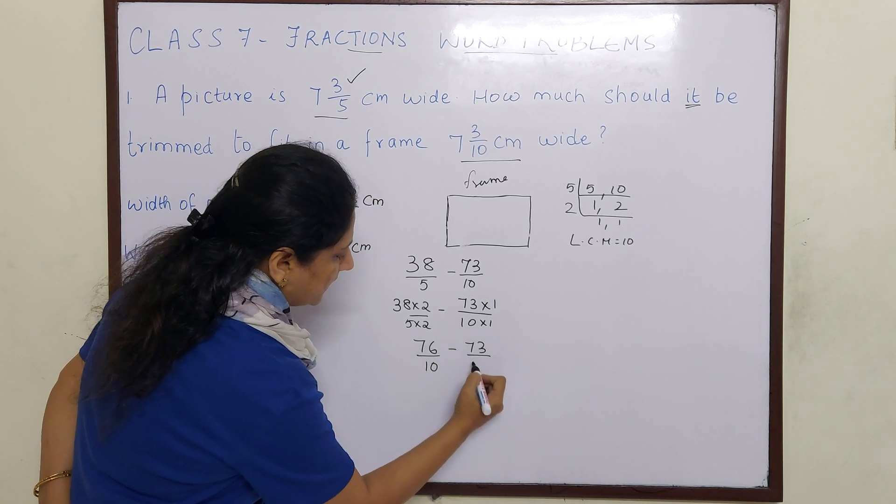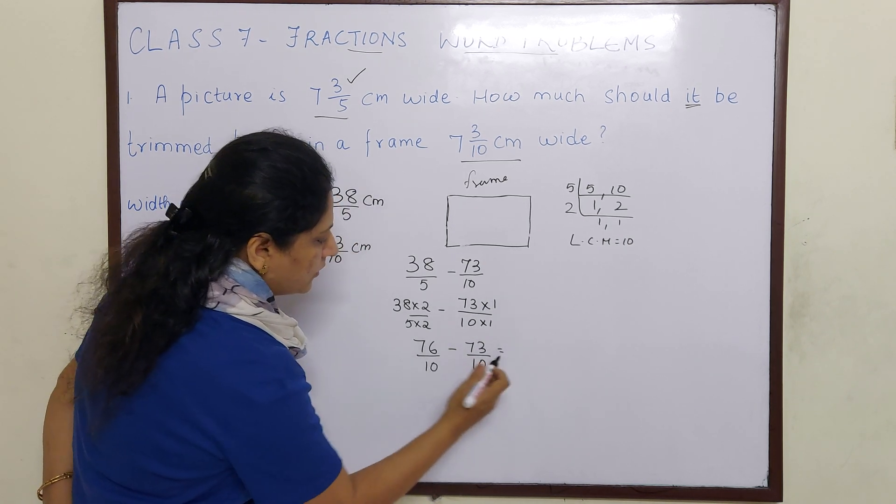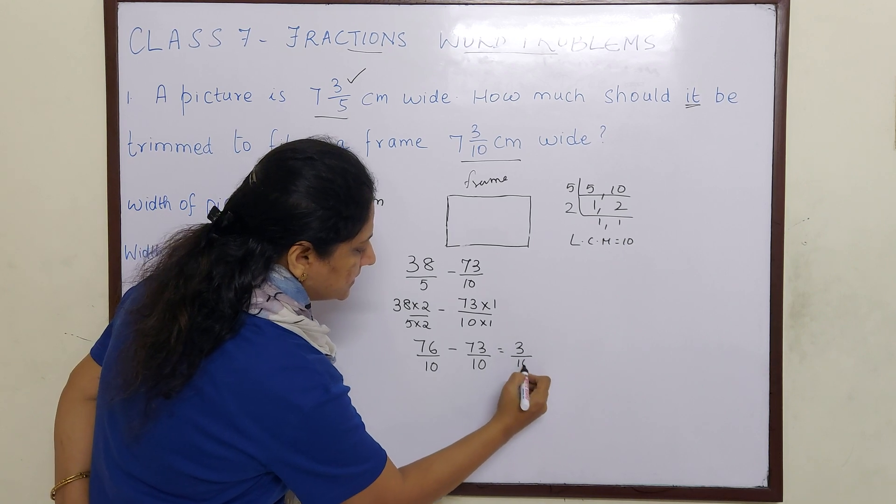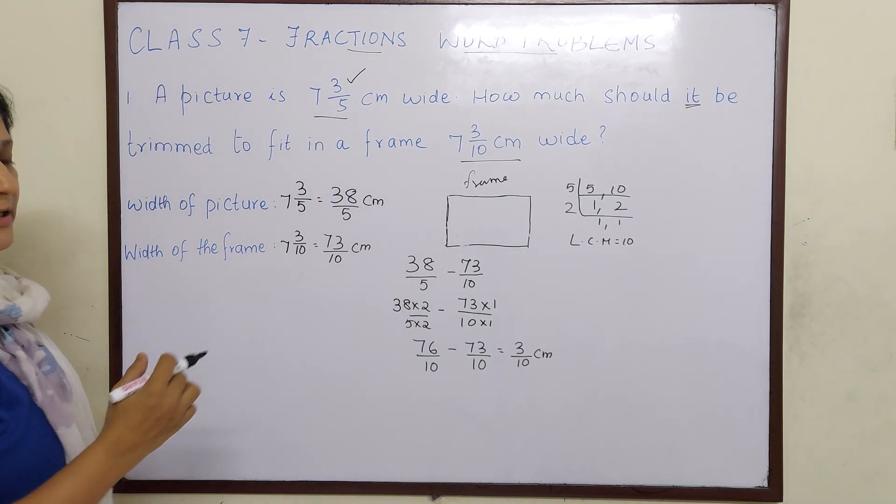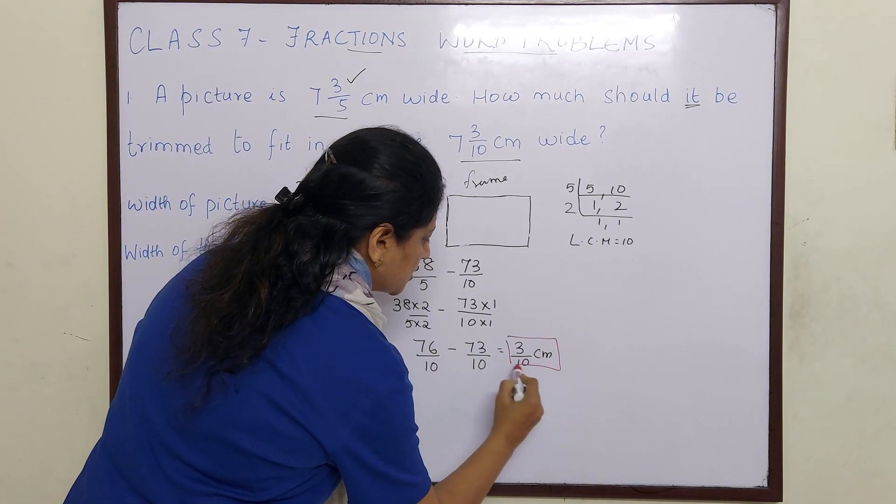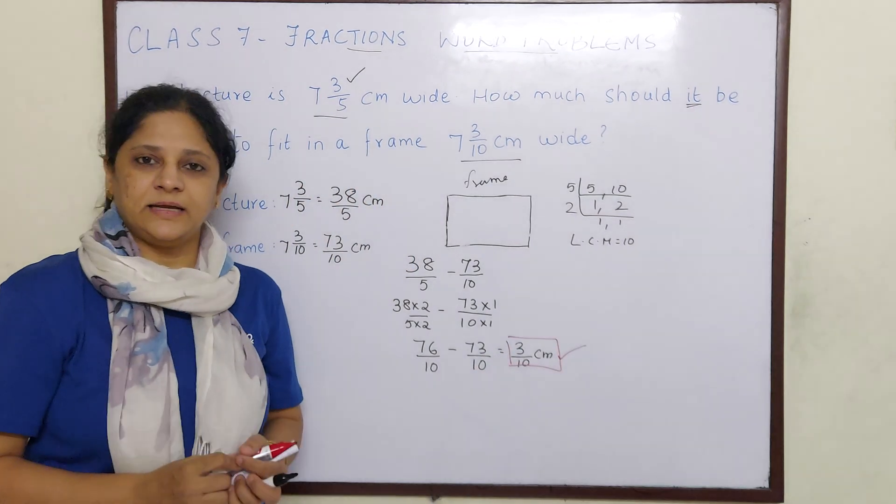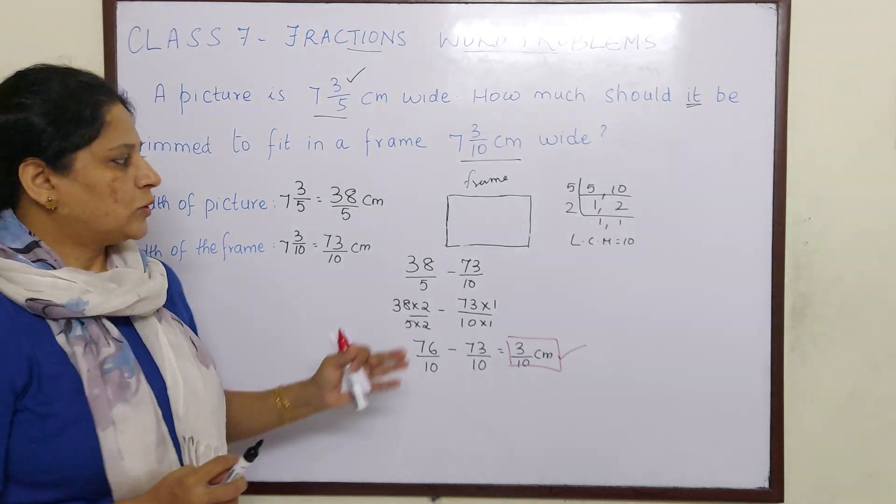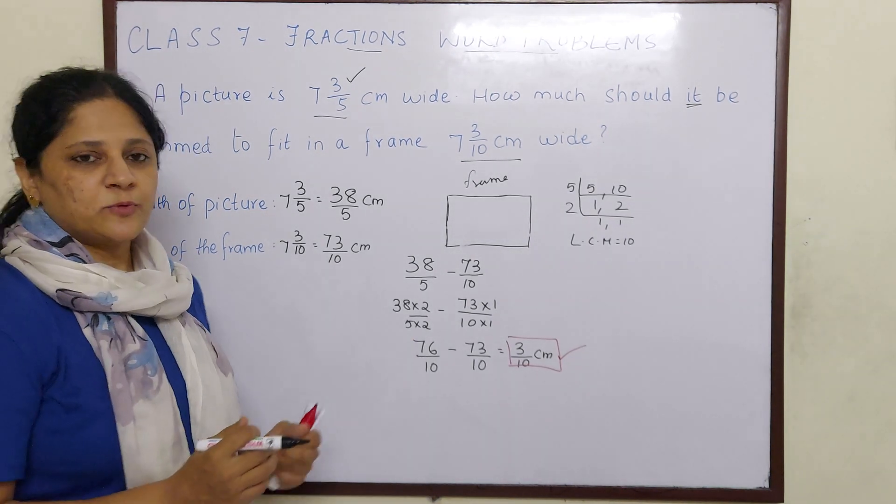So 38 times 2 minus 73 times 1. 38 times 2 is 76 minus 73 times 1 is 73, over 10, which equals 3/10 cm. So how much should it be trimmed? This is our answer. The picture should be trimmed by 3/10 cm. Hope you understood children. Let us move to the next problem.